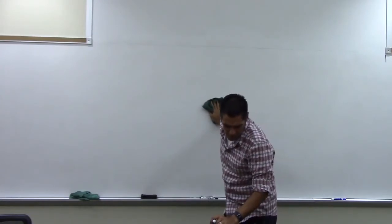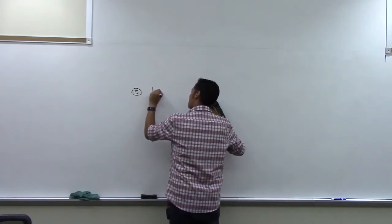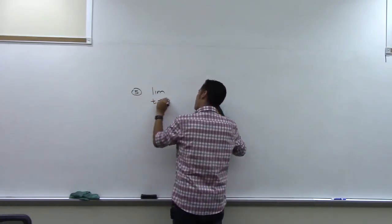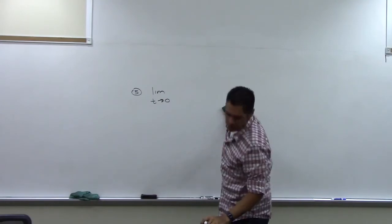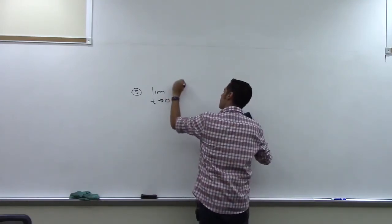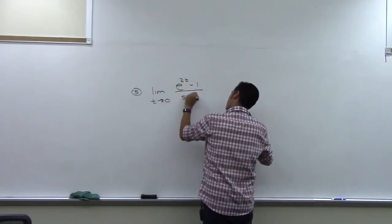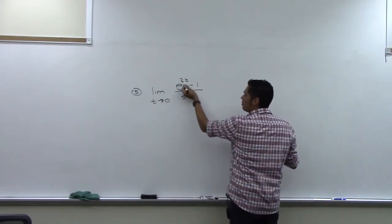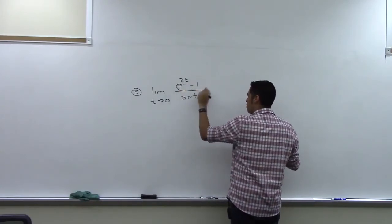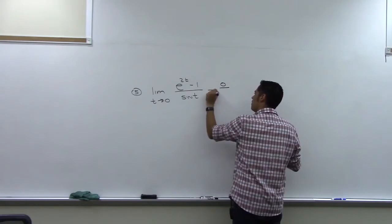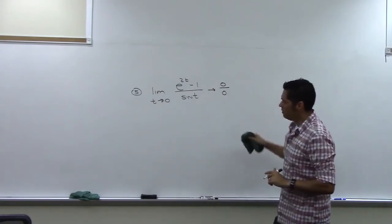Number five: the limit as t goes to zero of (e^(2t) minus one) over sine t. Letting t go to zero: two times zero is zero, e to the zero is one, and one minus one is zero — so the top is zero. Sine of zero is also zero, so we have the zero over zero form we need for L'Hôpital's rule.